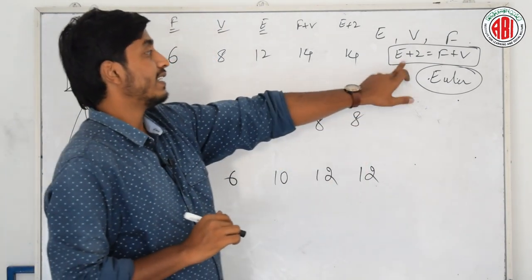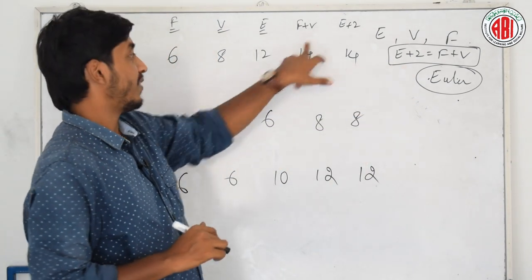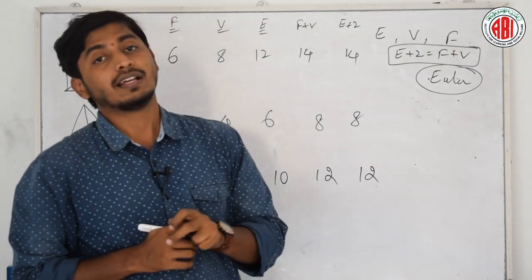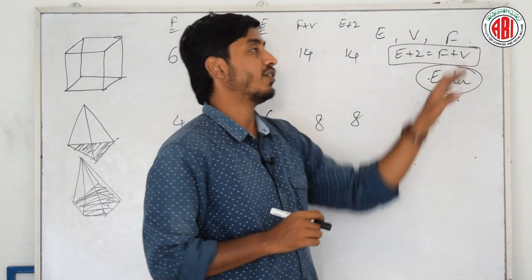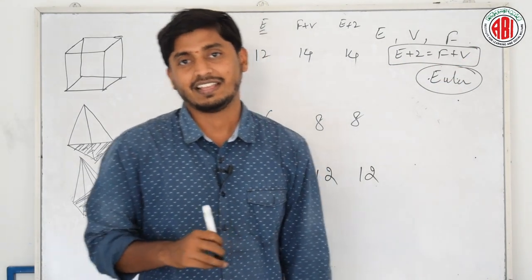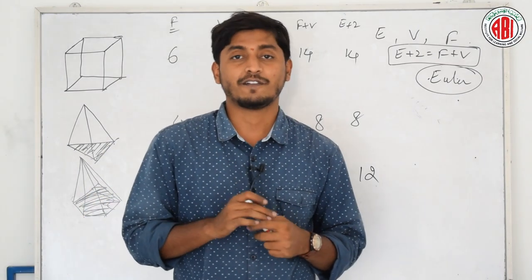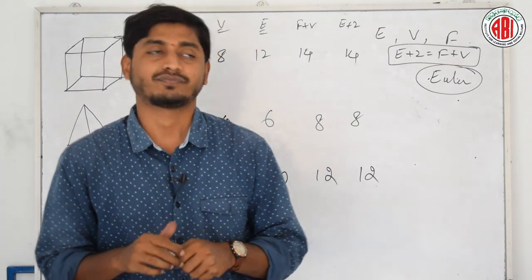Is this rule satisfied? All are equal. That is the Euler's relation. E plus 2 is equal to F plus V. Then only a shape can be formed.